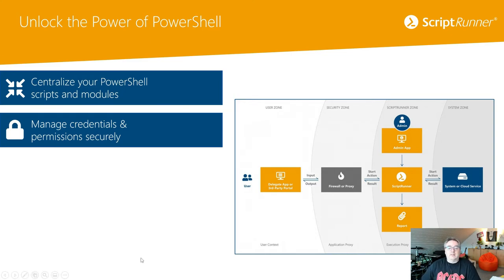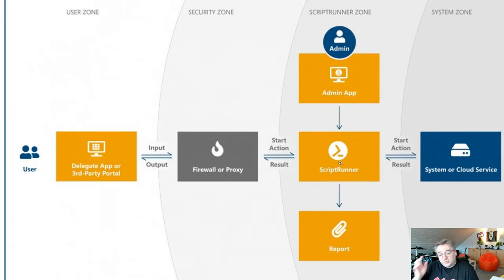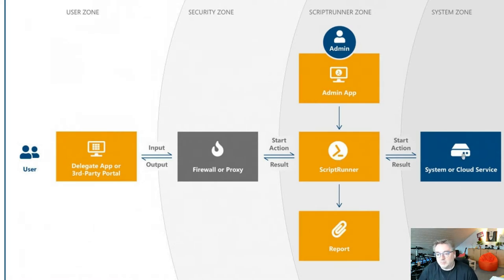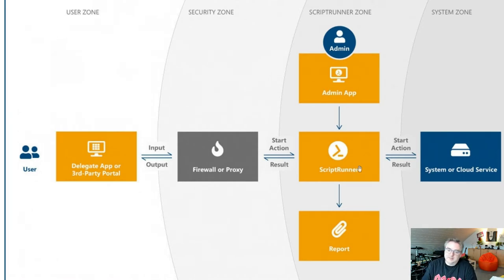When using PowerShell together with ScriptRunner, ScriptRunner is the only instance that actually executes the scripts. That means only ScriptRunner needs access to your back-end systems — whether on-premises, cloud, or hybrid — and only ScriptRunner needs the credentials to run scripts and establish connections to your back-end systems. This makes the whole process of running scripts very easy and secure.